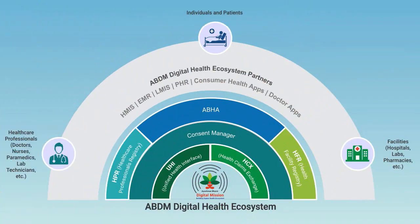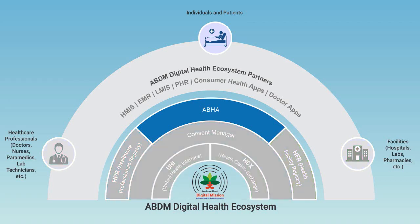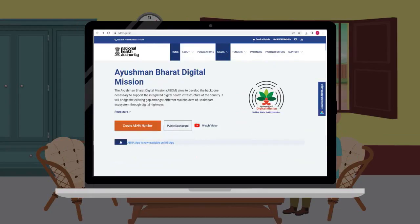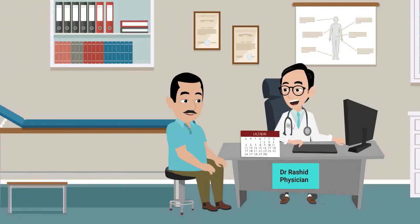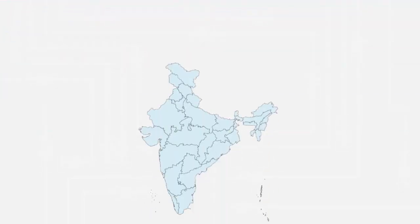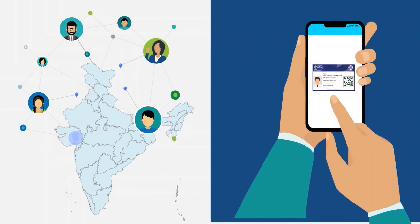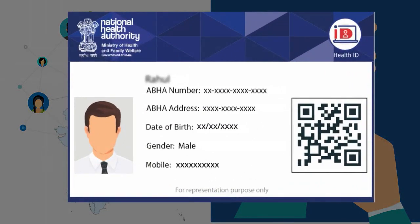Let us first understand the concept behind ABHA and how individuals like Rahul can avail its benefits. Ever since Rahul came to know about ABDM, he is really excited to learn how he and his family can participate. He visits his family physician, Dr. Rashid, to learn about it. Dr. Rashid explains that any individual can participate in the ABDM ecosystem by simply creating their unique health identifier — ABHA.